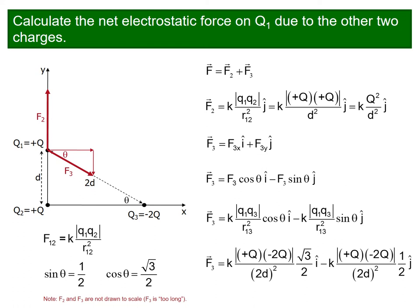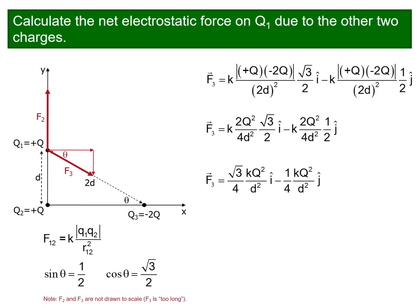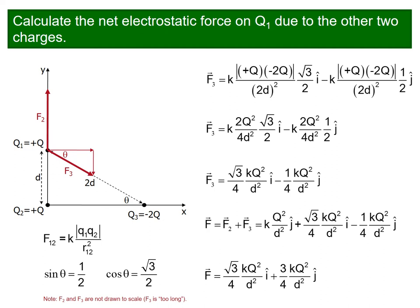With values replaced and simplified, we get root 3 over 4 times k Q squared over d squared i hat plus 1 over 4 times k Q squared over d squared j hat. I hat is the unit vector for the x-axis, so this is the x-axis component value. This is our final force.